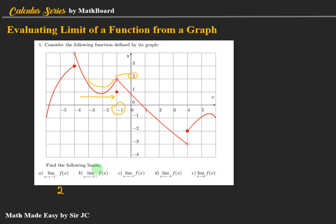For letter B, negative one from the right: coming from the right going to negative one, the value being approached by the function is also two. For letter C, the limit of f of x as x approaches negative one is also equal to two, because the left and the right-hand side limits are both equal to two.